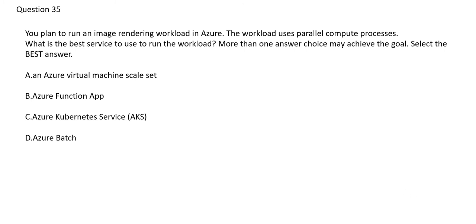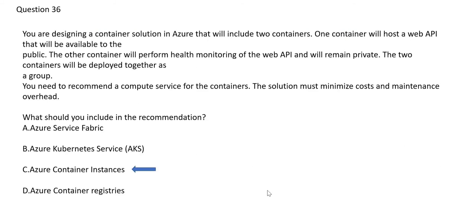Whenever you see image rendering or parallel compute in a question, the obvious answer should be Azure Batch. A virtual machine scale set will not help with parallel compute processes regardless of how many VMs are in the set. A function app handles small-level transformations and cannot manage parallel compute. AKS is used to host and publish microservices-type applications. Therefore, Azure Batch is the final answer.